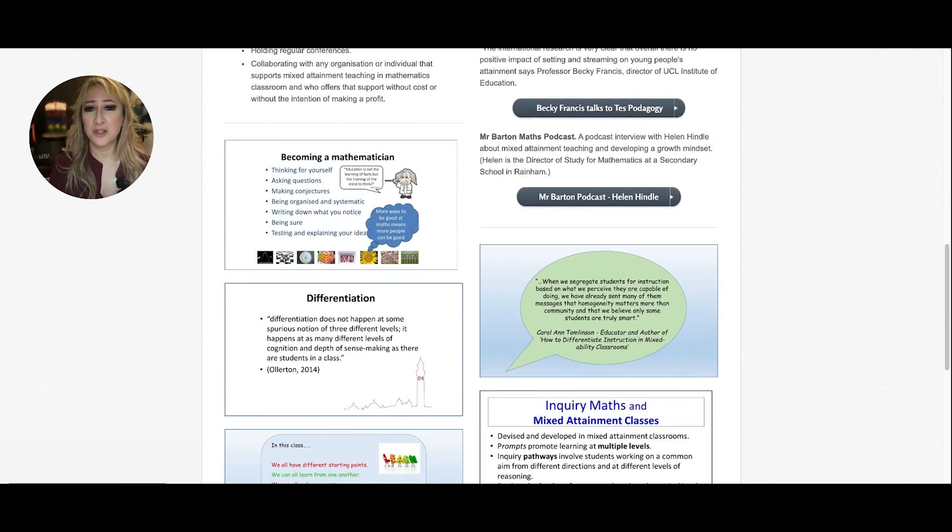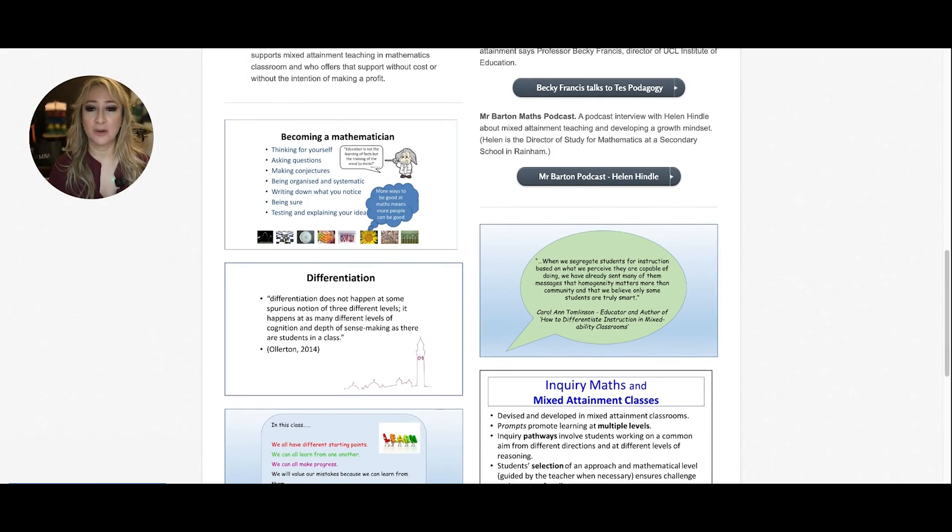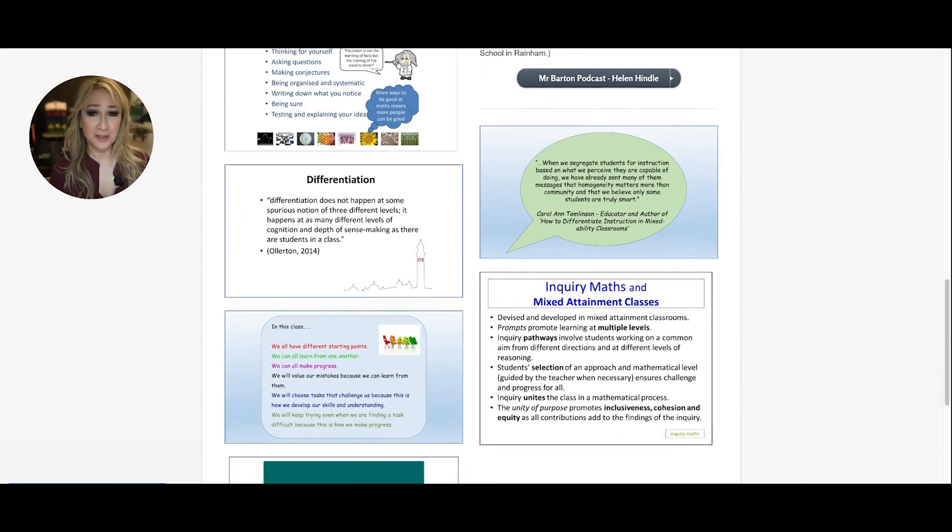Becoming a mathematician, it's really thinking for yourself, asking questions, making conjectures, being organized and systematic, writing down what you notice, being sure, testing and explaining your ideas. And then differentiation, it does not happen at some spurious moment of three different levels. It happens at as many levels of cognition and depth of sense making as there are students in a class. And that's Mike Ollerton, who is a wonderful proponent, a pioneer I would say, in mixed attainment mathematics learning.